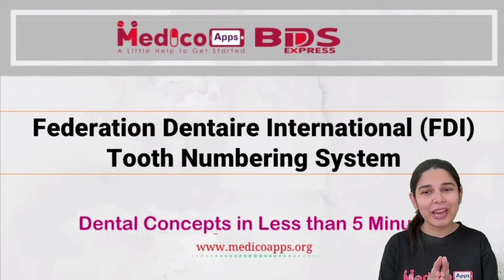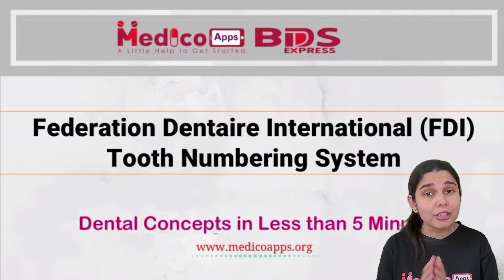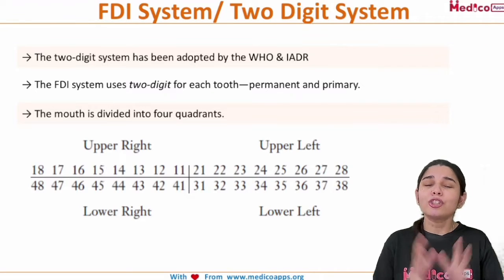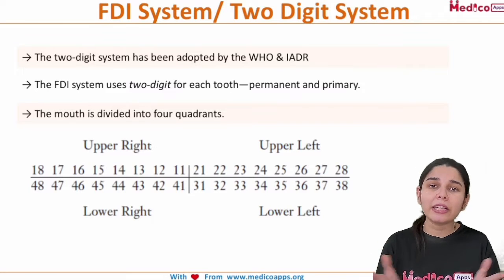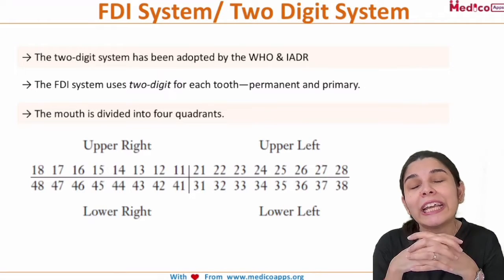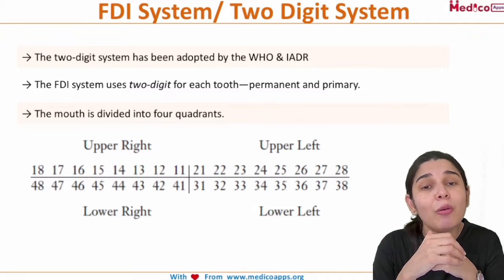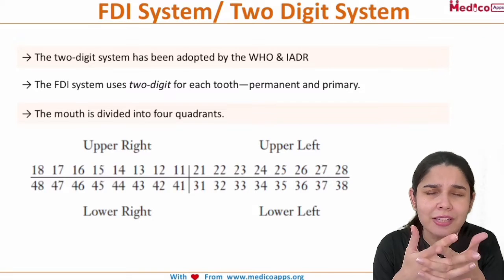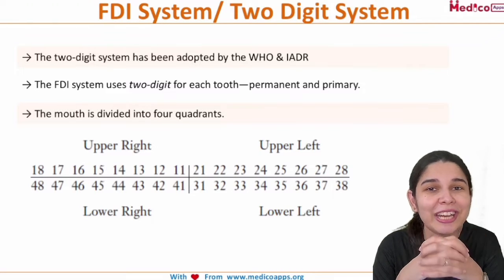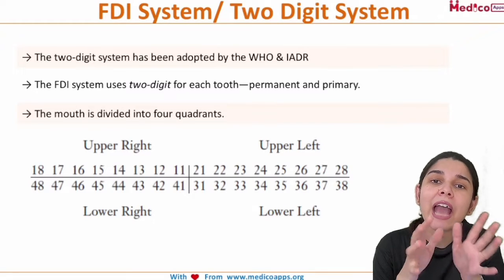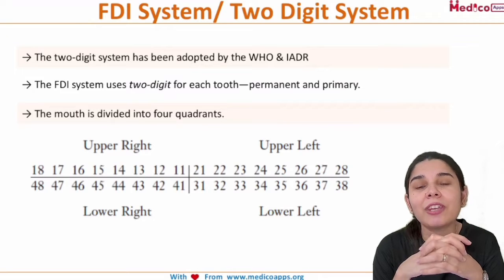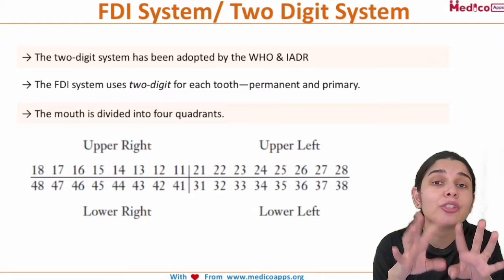Let's start by understanding this important international system used to number the tooth. The FDI system is a tooth numbering system — we need it because we need a way to identify a particular tooth in the oral cavity. This system is very easy and it is universally accepted.